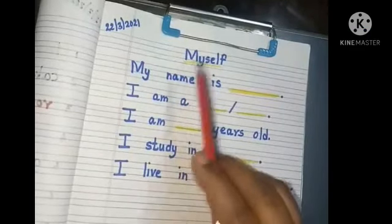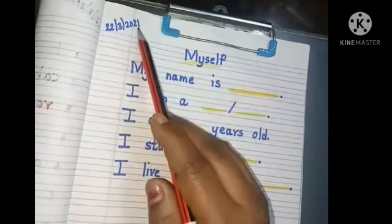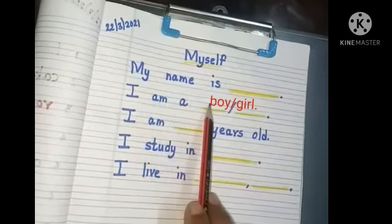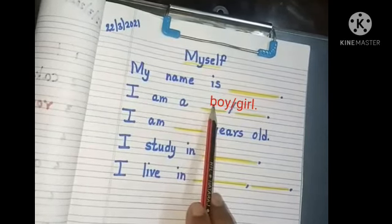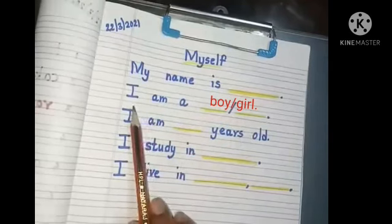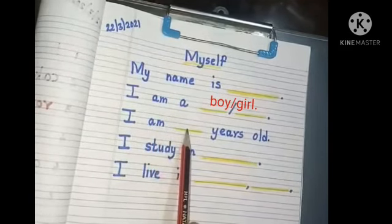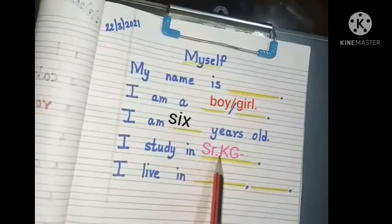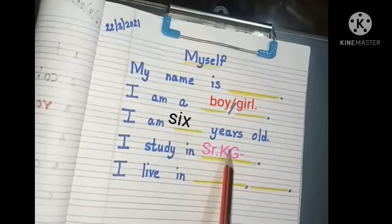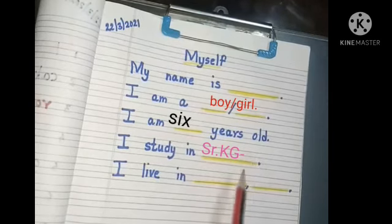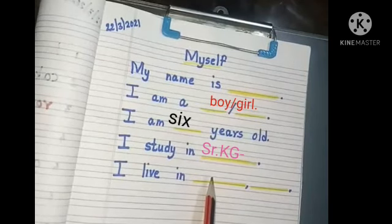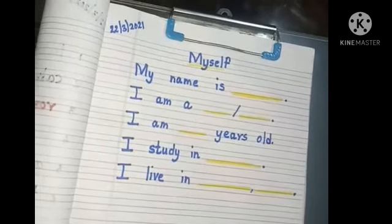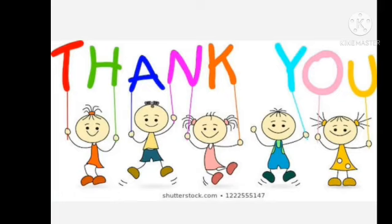Children, here is your homework. Date: 22/3/2021. Topic: Myself. Write: My name is dash — fill your name. I am a boy or I am a girl. I am 6 years old — spelling S-I-X. I study in Senior KG — S-R dot, K-G, your division, full stop. I live in Hadapsar, Pune — full stop. Do understand the concept and revise at home. Thank you.